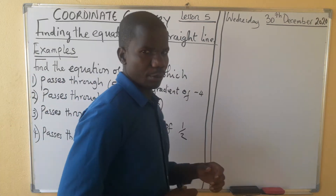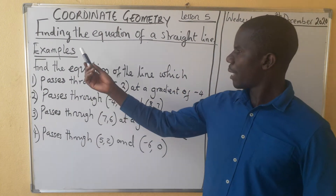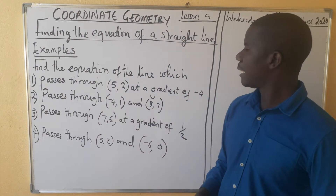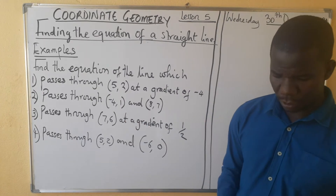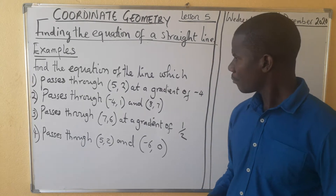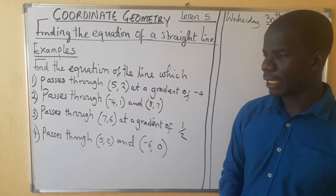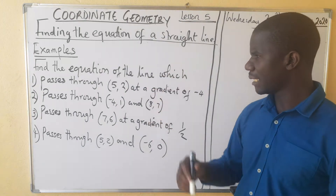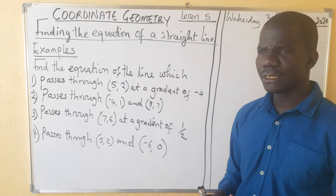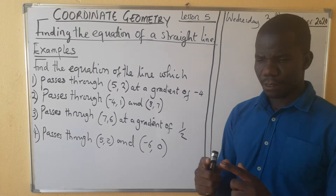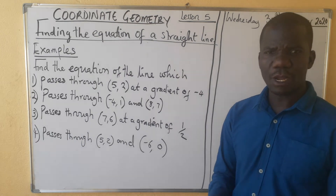Hello, welcome to today's lesson where we are looking at finding the equation of a straight line under coordinate geometry. To write the equation of a straight line, we always need the coordinates of one point.